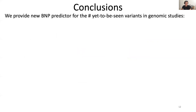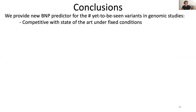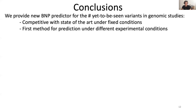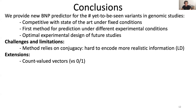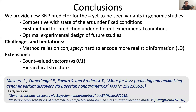To wrap up, we provided a new Bayesian nonparametric predictor for the number of yet-to-be-seen variants in genomic studies. This is competitive with state-of-the-art when conditions are kept fixed, but it's also the first method for prediction under changing experimental conditions, and it can guide optimal experimental design of future studies. A limitation is that our method relies on conjugacy, so it's hard to encode more realistic information such as linkage disequilibrium — though all competing methods also assume independence of loci, and our method remains useful on real data. Potential extensions include going beyond binary count vectors to count-valued vectors, or including a hierarchical structure in the data. You can check out our work on arXiv, as well as an early version at AABI at NeurIPS 2019 and BNP at NeurIPS 2018.